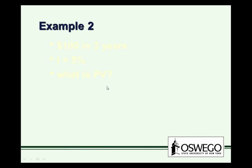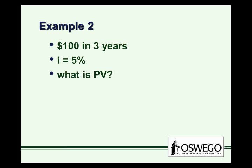So now let's take that and apply it to an example. So, for example, $100 in three years at an interest rate of 5%. What is the present value? We can use the formula on the previous slide. We have $100. We plug in our 5%. We plug in our three years. And we would calculate that to get a little over $86.